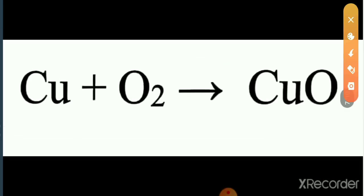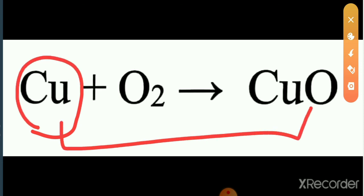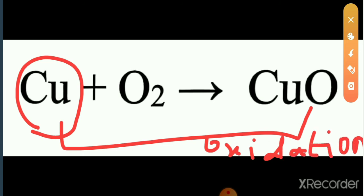What do you mean by oxidation? Oxidation is a process in which oxygen or an electronegative element is added. Simply, oxidation is a process in which oxygen is added, or hydrogen is removed.